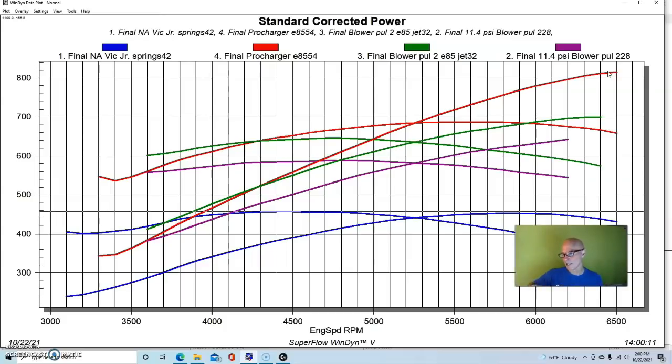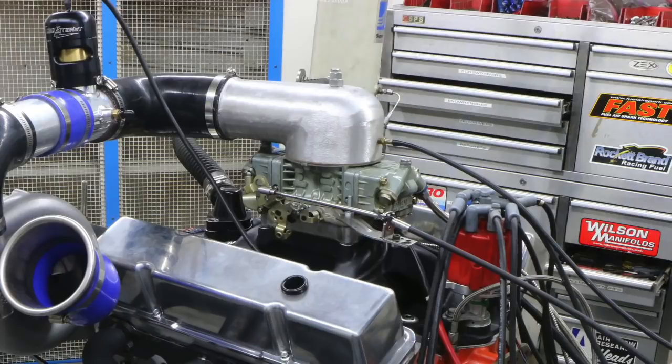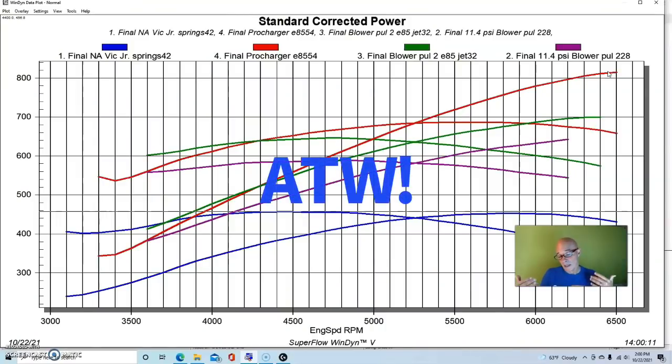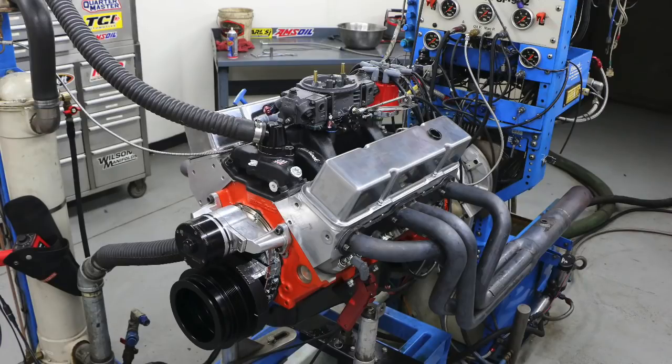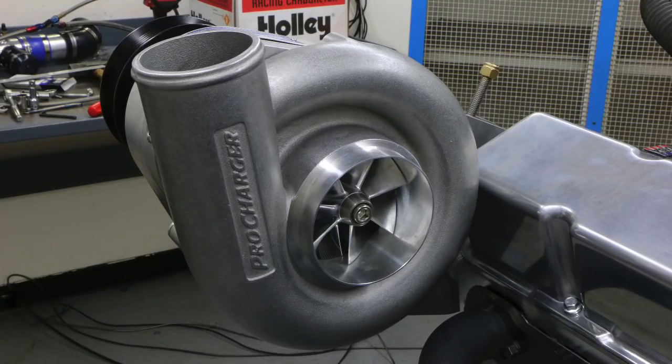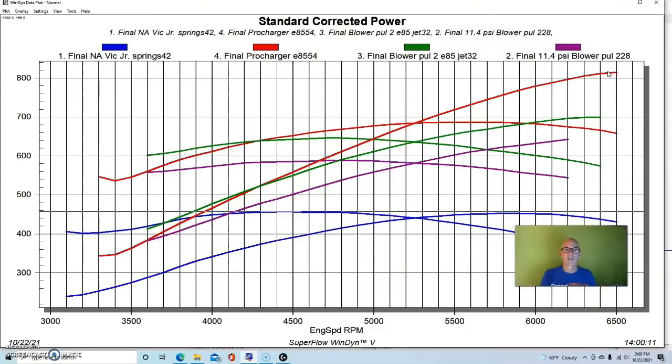The big roots blowers are not designed really to run lots of pressure. The Pro Charger also benefited from E85 just like the 671, and also from an air-to-air intercooler, which is obviously an added benefit. But this goes to show you that no matter what you pick, if you've got a small block Chevy, there are lots of power adders for it and you can make lots of power. Let's get to our conclusion.